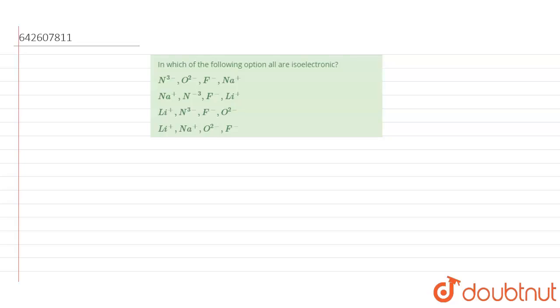have to tell which of the following options are isoelectronic. So first of all, let us write the electronic configuration.